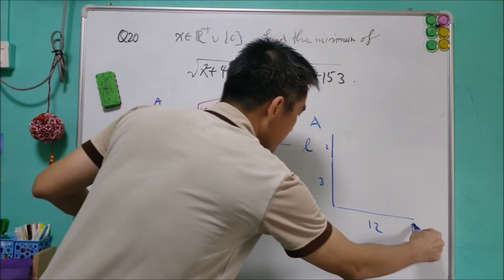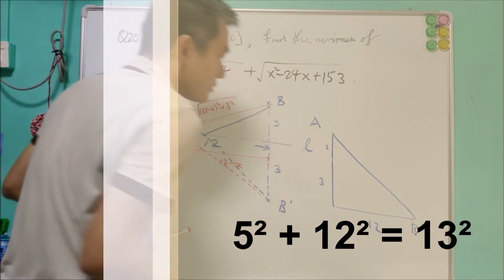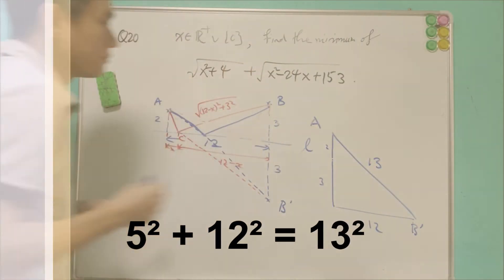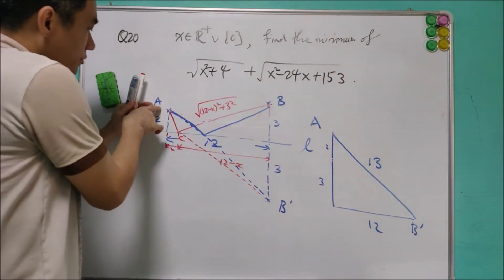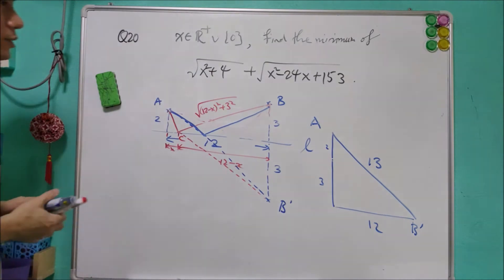This is A. And this is B prime. So 5, 12. Then we know from Pythagorean theorem, this will be equal to 13. So the shorter distance from A to B prime will be a straight line. And that is equal to 13.